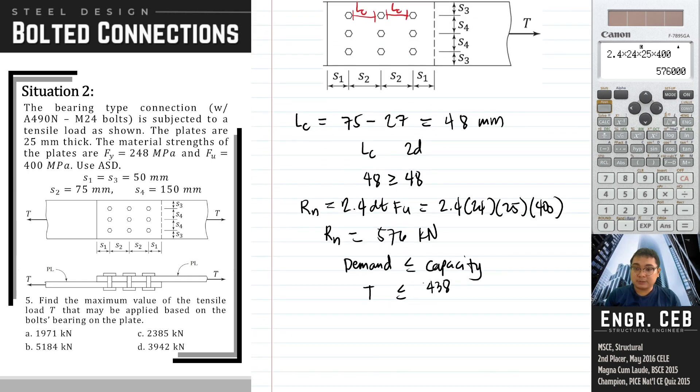We need to multiply this by 3 because we have 3 bolts, and then for bolts 4 to 9, the strength is 576, so we multiply it by 6. Don't forget the factor of safety for bearing, which is also 2.